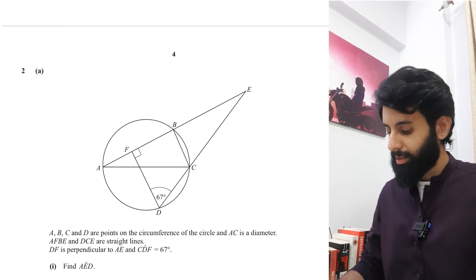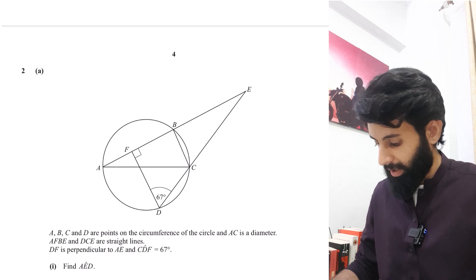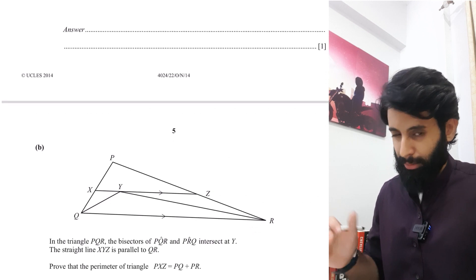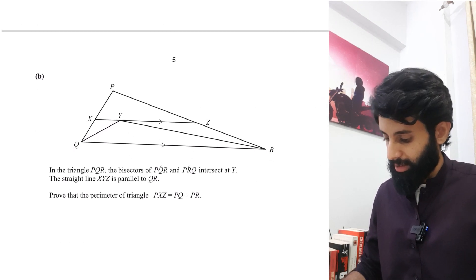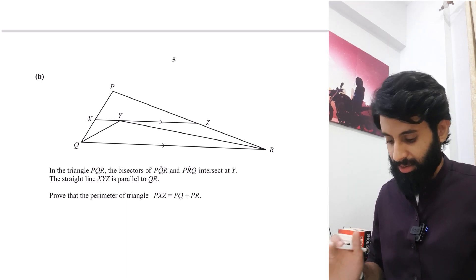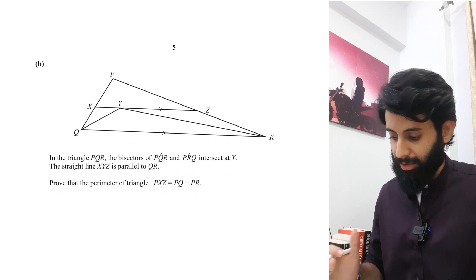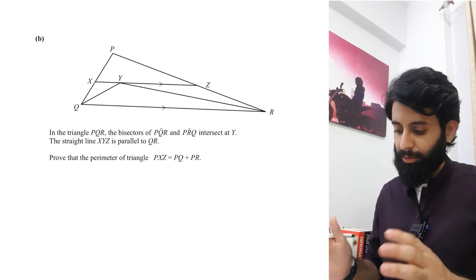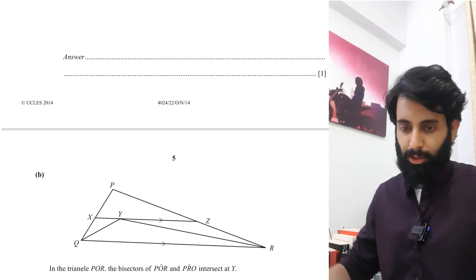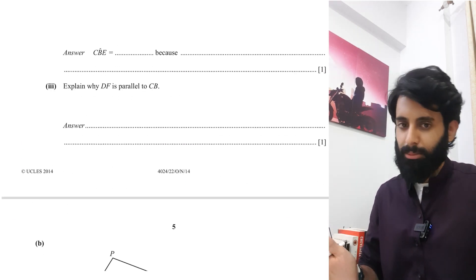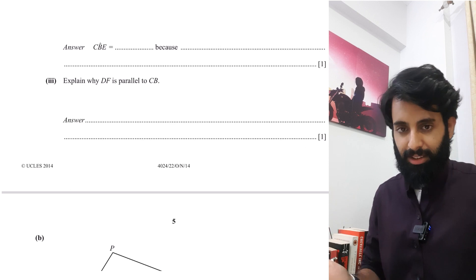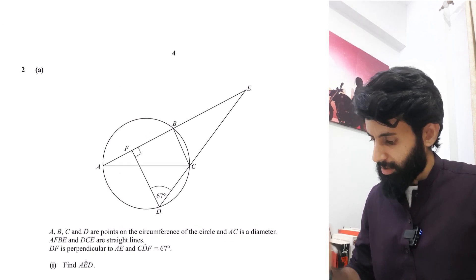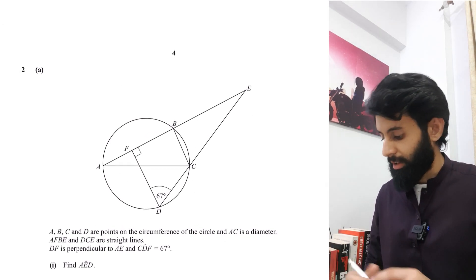In this video I'm going to be solving another question from past papers. This question involves angle properties of circles and general angle properties. It's my absolute favorite because it's one of the most challenging questions I've come across — it takes you right to the edge of your understanding of angle properties and triangles. This is from Winter 2014, October/November 2014, Paper 2, Variant 2.